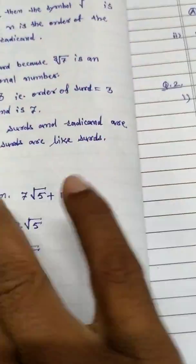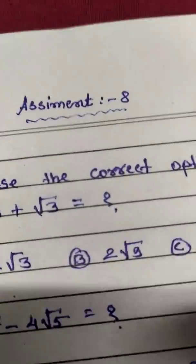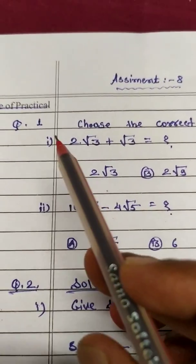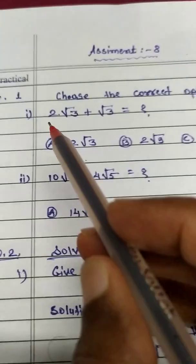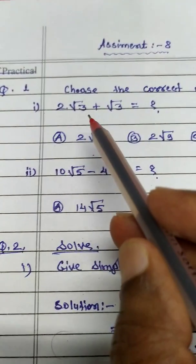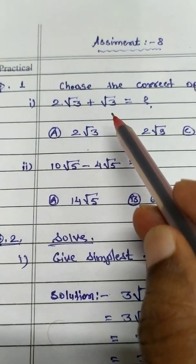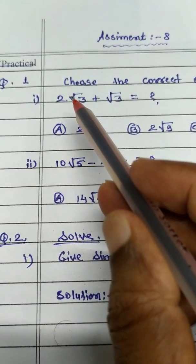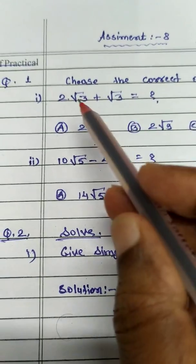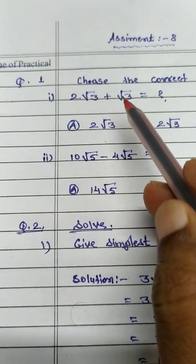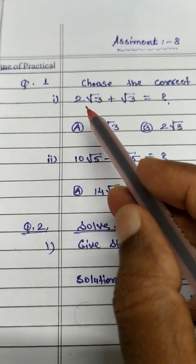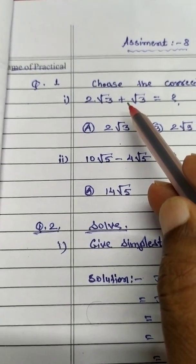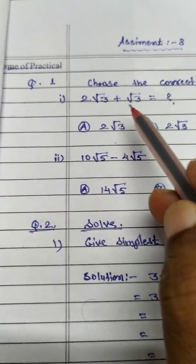Now we see assignment, assignment number 8, that is work of day 8. Now first example is choose the correct option. Example is 2 root 3 plus root 3. In this case also radicand is same, and order of these surds is also same. So we have to take the addition. In this case that is 1, so 2 plus 1 that is 3. So answer is 3 root 3.